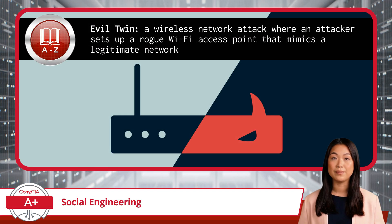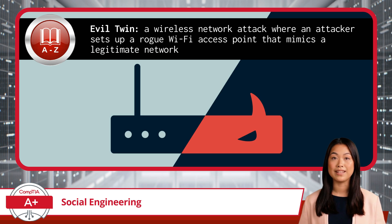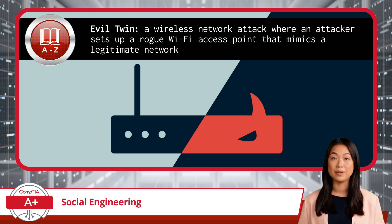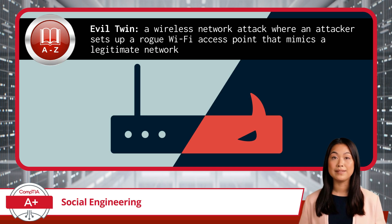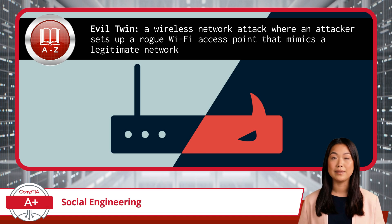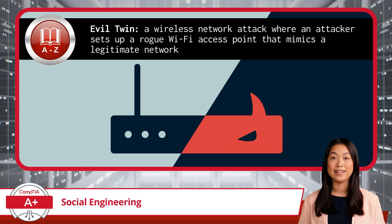Finally, I've got one more for you: the Evil Twin Attack. This one is a bit more digital and a little less tradecraft. The Evil Twin is a wireless network attack where an attacker sets up a rogue Wi-Fi access point that mimics a legitimate network. The network name, or SSID, of the evil access point will appear nearly identical to the genuine access point, be it a wireless network at your office or your favorite coffee shop. Once you connect, thinking you're safe, the attacker is able to monitor everything you do online. The key is to double-check those network names and avoid connecting to anything suspicious, especially in public places. When it comes to Wi-Fi, sometimes two isn't better than one — especially when one of them is evil.